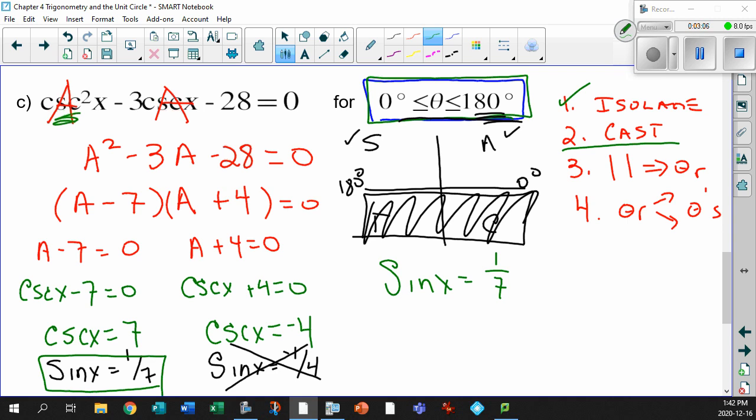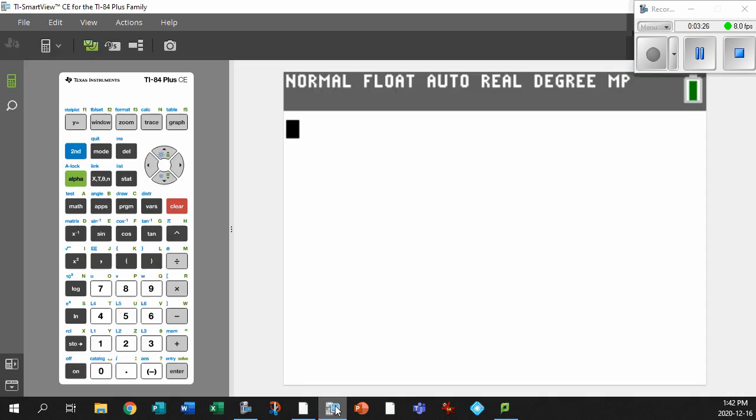Cool. So take the, we've done the cast, take the absolute value of this, where is sine x 1 seventh? Now notice that that doesn't fall into any of the trig ratios that we're used to. That's not pi over 2, that's not 1 half, that's not the root 2 over 2, or any of that other stuff. So how do we solve this? Grab your calculator.